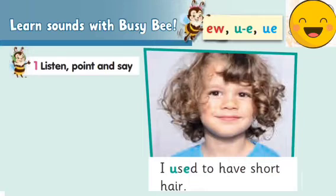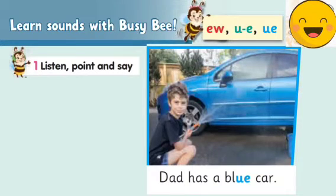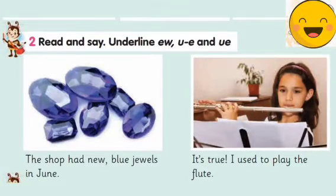'Dad has a blue car.' Now I want you to underline the 'ew', 'u-consonant-e', and 'ue' spelling patterns in the sentences. Okay.